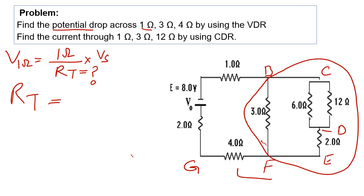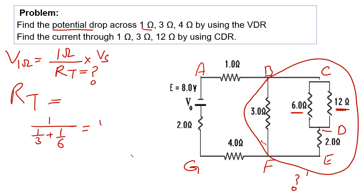Starting from this circle: the 6 ohm and 12 ohm are in parallel. So 1/Ra = 1/3 + 1/6, which gives Ra = 4 ohm. We now have the total resistance of this parallel combination of 6 ohm and 12 ohm.